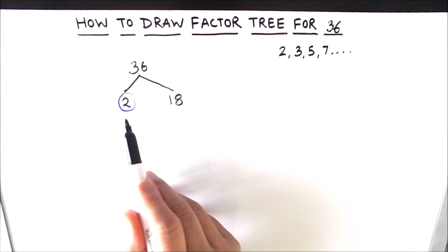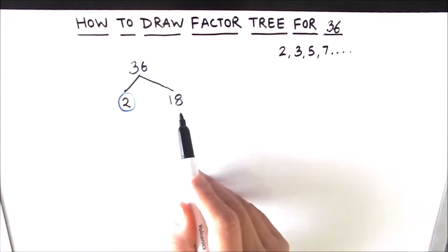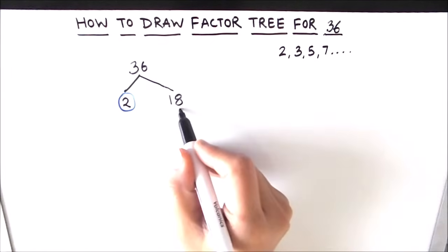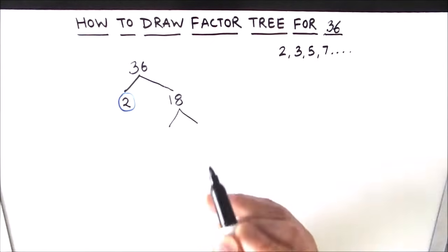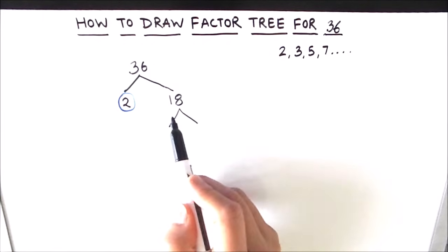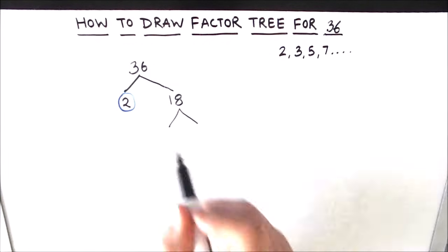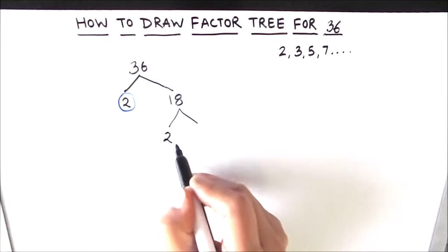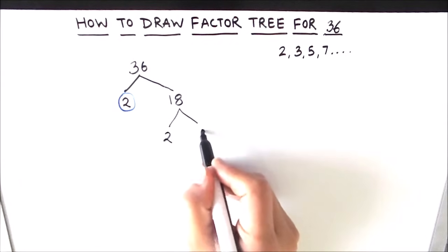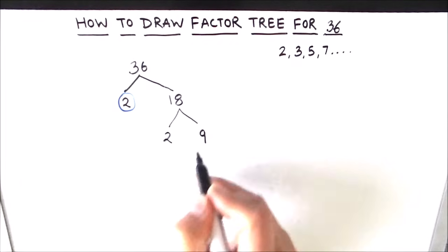Now we are going to break 18 into its factors. Here too we are going to use the same strategy — we'll make two branches and check whether the number is even or not. Since 18 is even, we write 2 as one of the factors and divide 18 by 2. 2 times 9 is 18, so the other factor is 9.